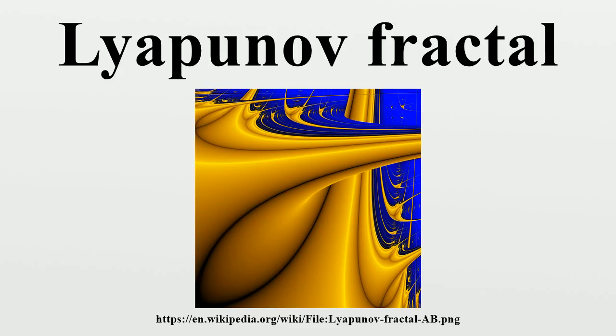In the images, yellow corresponds to stability and blue corresponds to chaos. Lyapunov fractals are generally drawn for values of A and B in the interval.